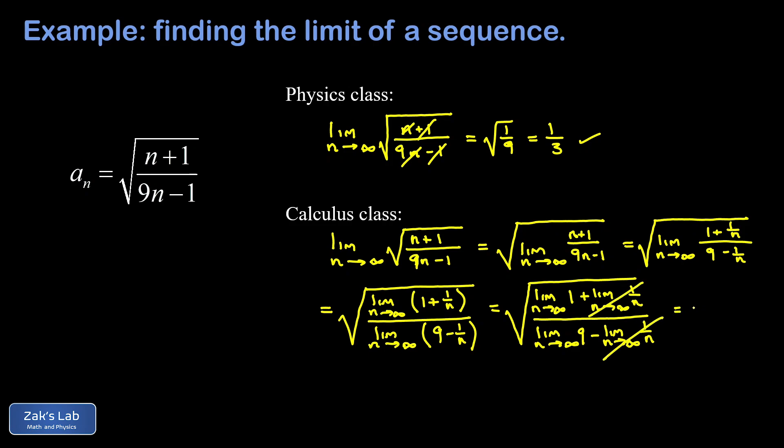So those are gone. We also have the fact that the limit of a constant is just equal to that constant. So the numerator simplifies to 1, denominator simplifies to 9, and we arrive at the same place: square root of 1 over 9 which gives us a limit of one third.